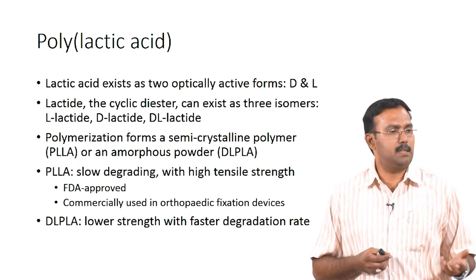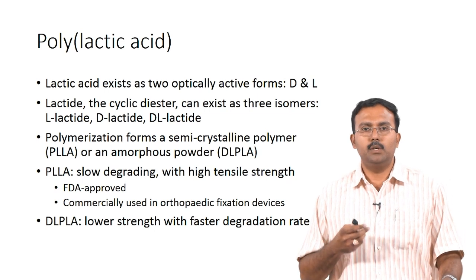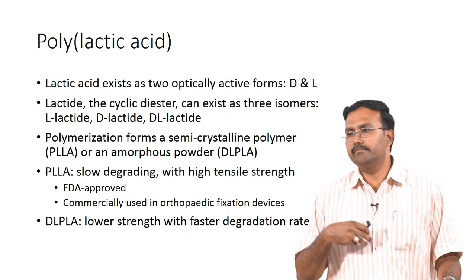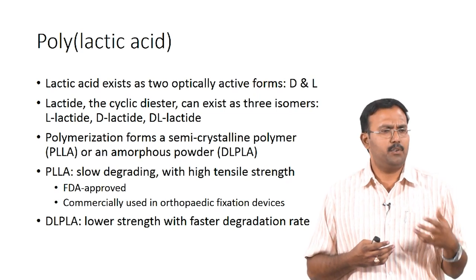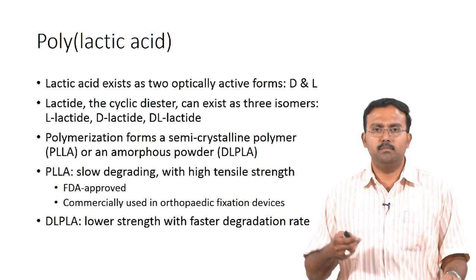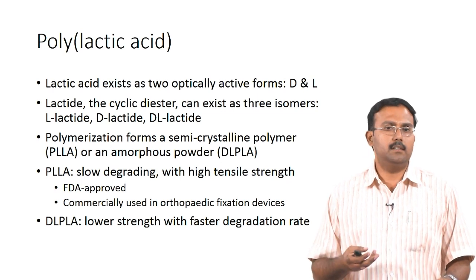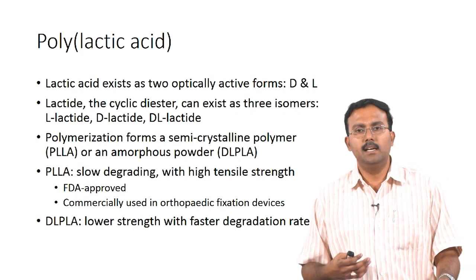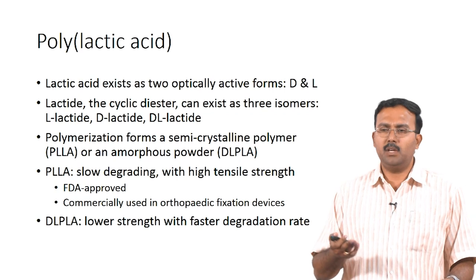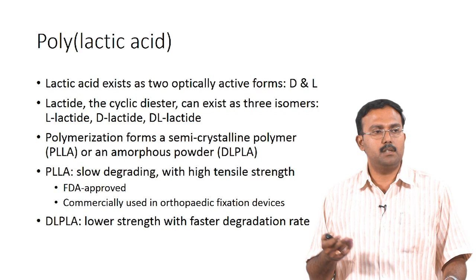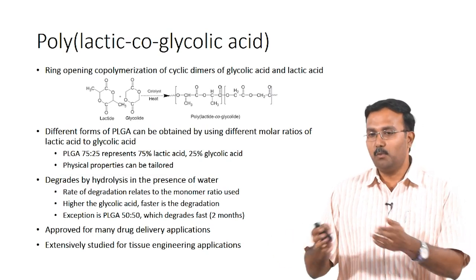The polymerization can form semi-crystalline polymer or an amorphous powder depending on which stereoisomer is used. If PLLA is formed then it is semi-crystalline; DL-PLA which uses both D and L together forms an amorphous powder. You can tailor the strength and degradation rate based on this. PLLA is slow degrading with very high tensile properties and has been studied for bone applications — commercially approved for orthopedic fixation devices like bone screws. The D and L combination has lower strength and a faster degradation rate. PLA is also one of the most commonly used inks in 3D printing.